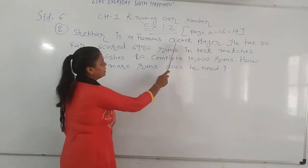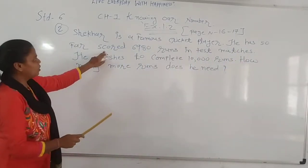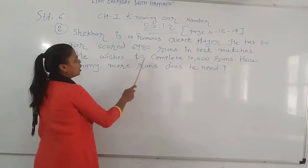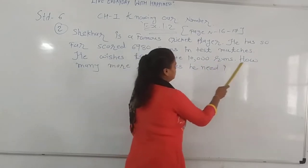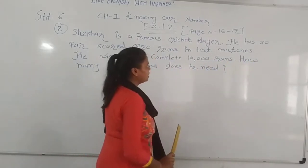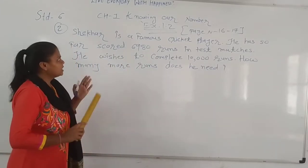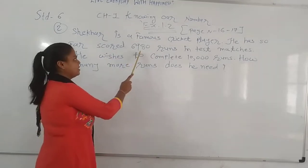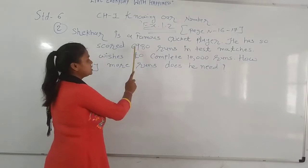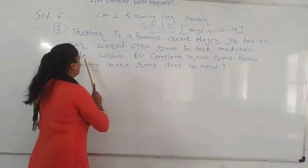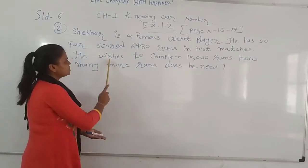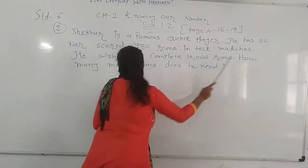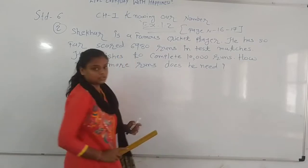Sekhar is a famous cricket player. He has so far scored 6,980 runs in a test match. He wishes to complete 10,000 runs. So how many more runs does he need to make?